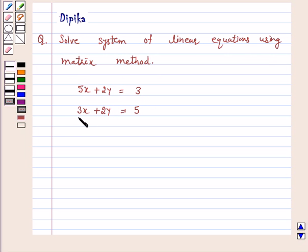Solve system of linear equations using matrix method. 5x plus 2y is equal to 3, 3x plus 2y is equal to 5. Let's start the solution.